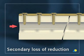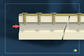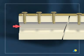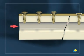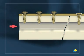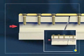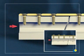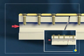Secondary Loss of Reduction: In conventional plating systems, screw loosening may lead to loss of reduction. In a locking system, screw loosening rarely occurs because the screw head is locked to the plate.